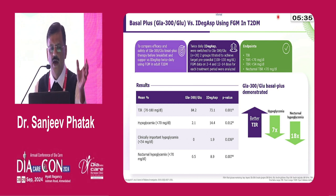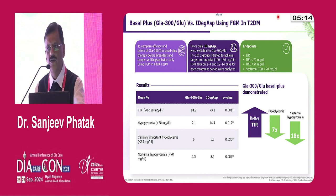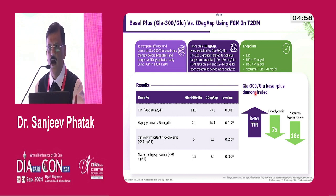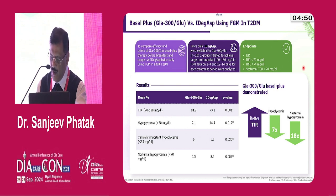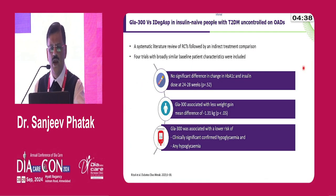IDegAsp is gaining popularity as a co-formulation — not a pre-mixed insulin — combining rapid-acting and long-acting insulin in a single cartridge. However, in a study comparing basal-plus glulisine twice daily (three injections per day) versus two injections of IDegAsp, time in range was better for the glargine-based therapy, hypoglycemia was seven times lower, and nocturnal hypoglycemia was much lower. Glargine plus glulisine twice daily offers better control, better time in range, and much less hypoglycemia compared to IDegAsp twice daily.